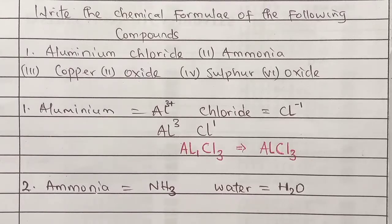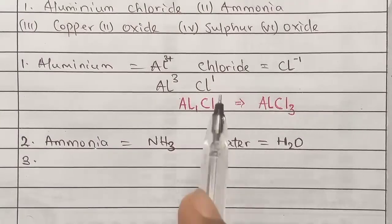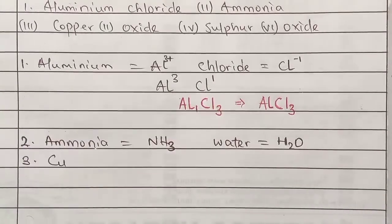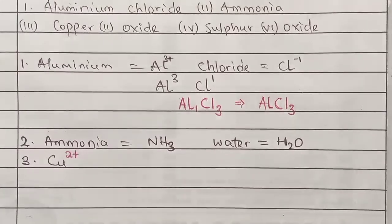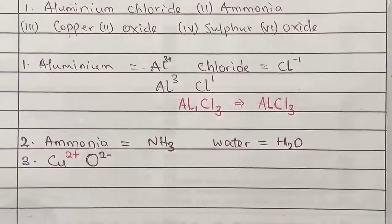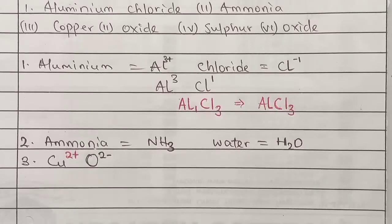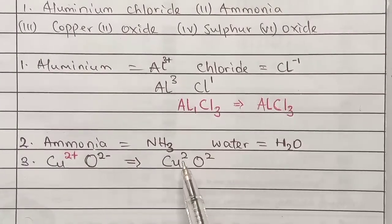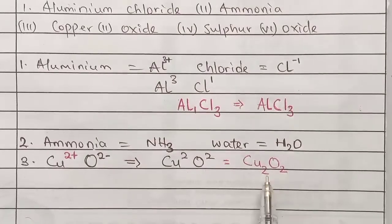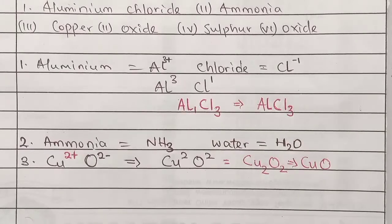For copper(II) oxide: the symbol for copper is Cu. The name says copper 2 oxide, so the oxidation state of copper is +2. Oxide comes from oxygen, so we have O with an oxidation state of minus 2. Changing to valence and applying criss-cross: the 2 from Cu goes to O and the 2 from O goes to Cu, giving Cu2O2. Since both subscripts are 2, we can cancel to get CuO. That is the chemical formula for copper(II) oxide.